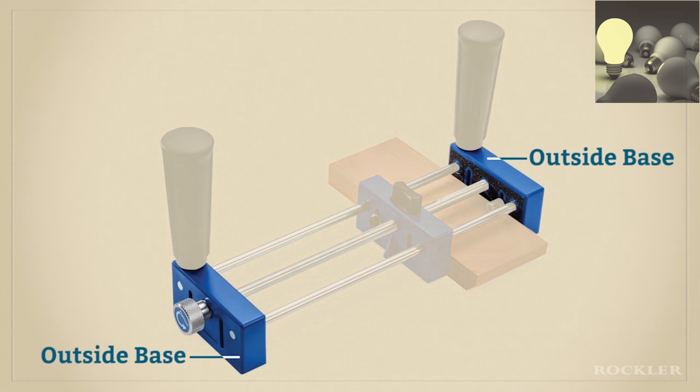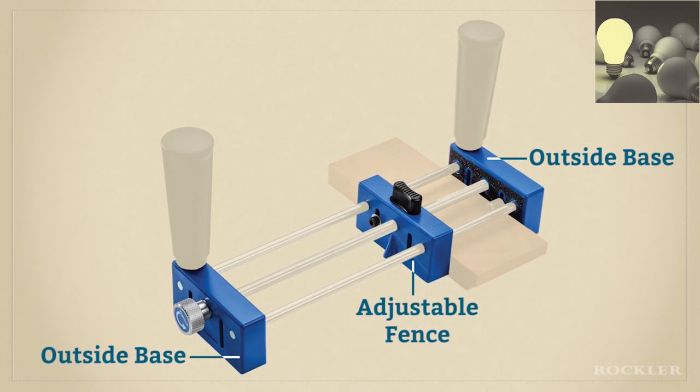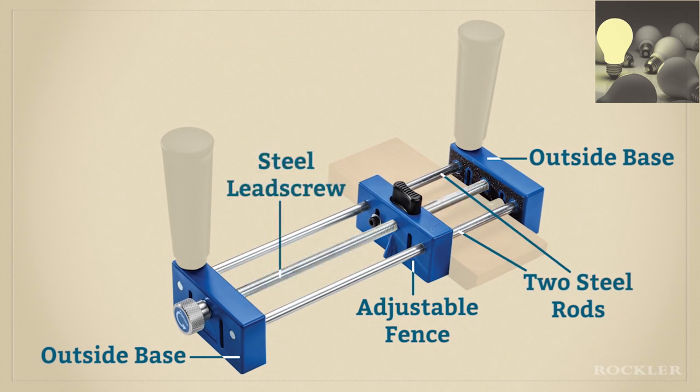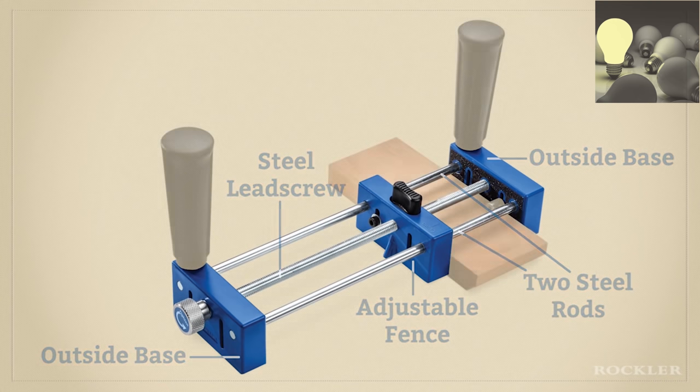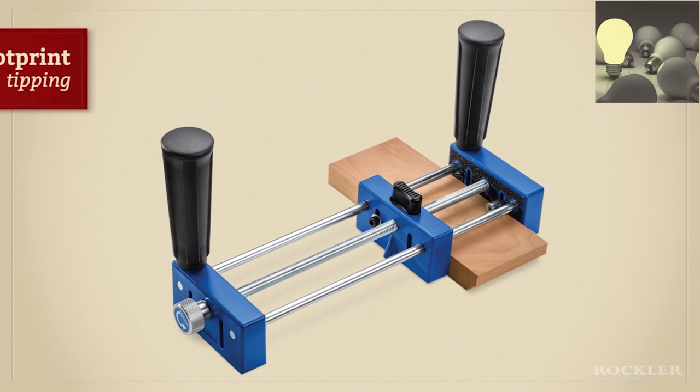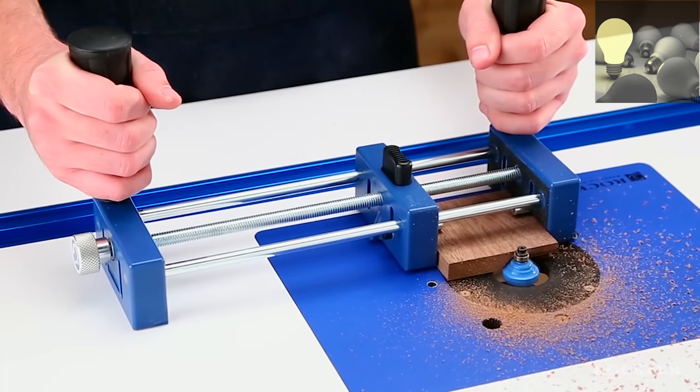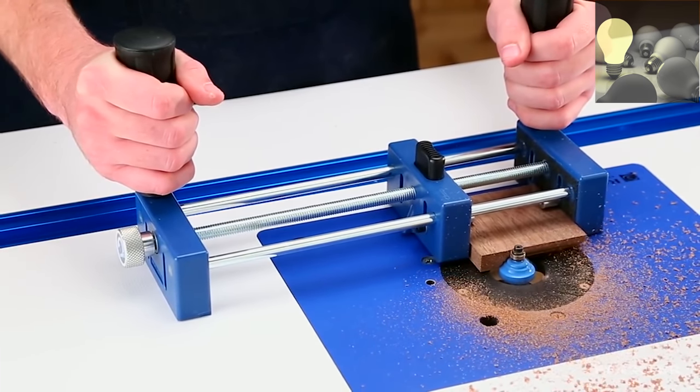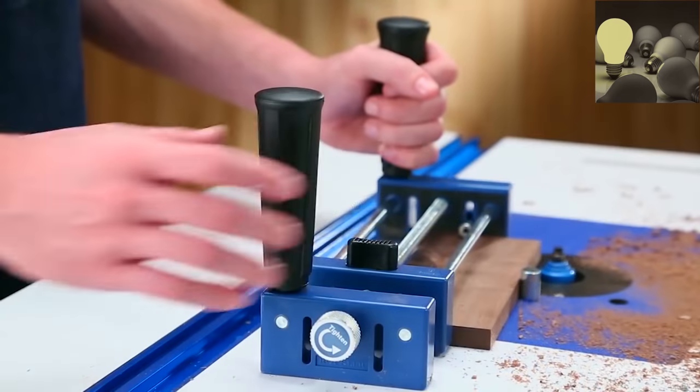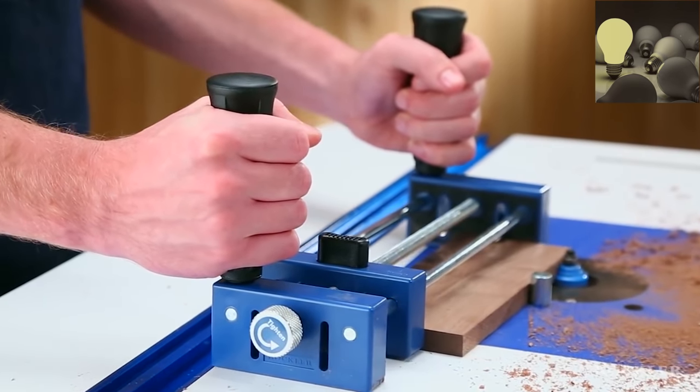The two outside bases and the interior adjustable fence are solidly connected by two plain steel rods and a steel lead screw. The results are a sturdy assembly and a footprint that's large enough to resist tipping. The smooth bottom surfaces reduce friction for easy movement on the table and the large rounded handles provide both comfort and complete control.